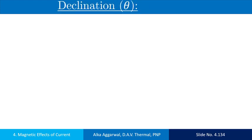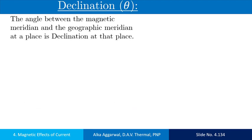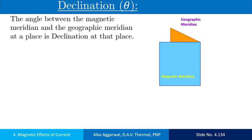First is magnetic declination or angle of declination. Magnetic declination is the angle between the magnetic meridian and the geographic meridian. The vertical plane passing through the geographic axis is called geographic meridian, and the vertical plane passing through the magnetic axis is called magnetic meridian. The angle between these two is called angle of declination.